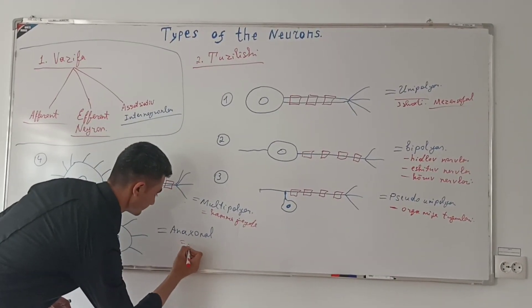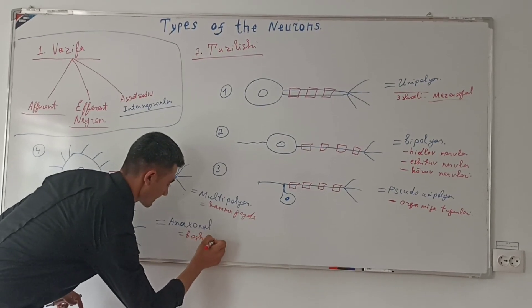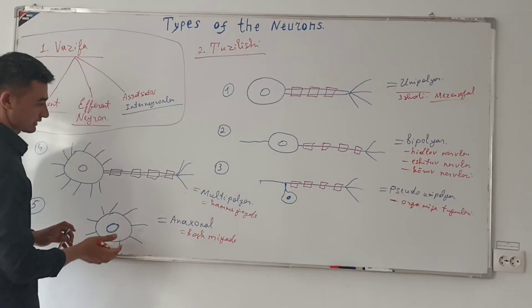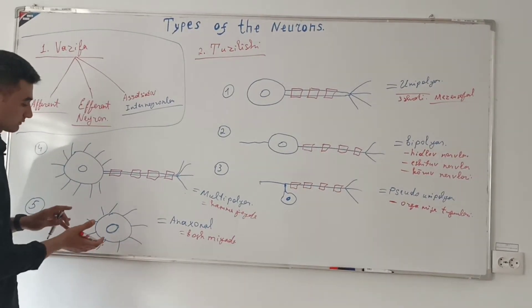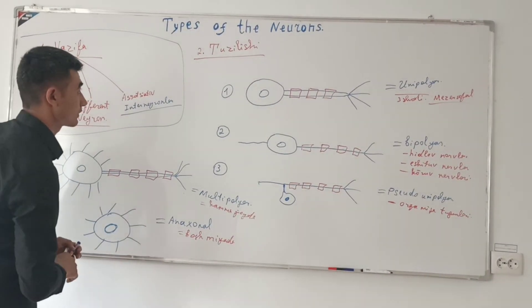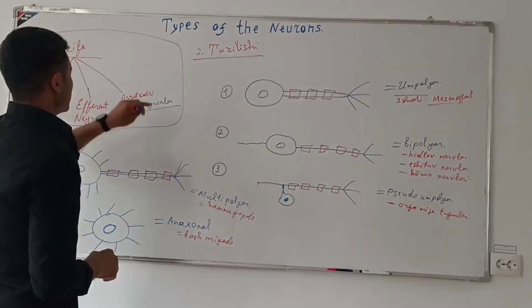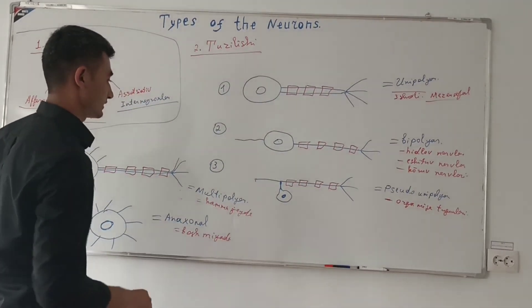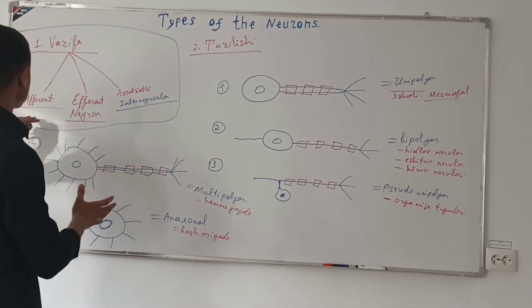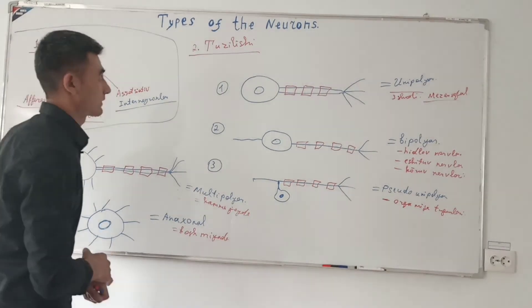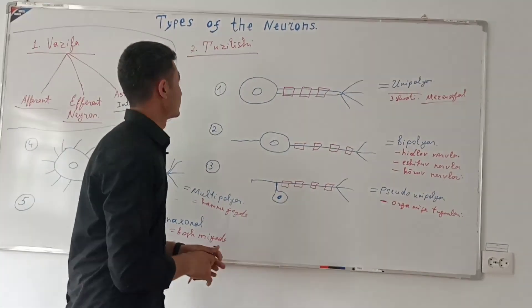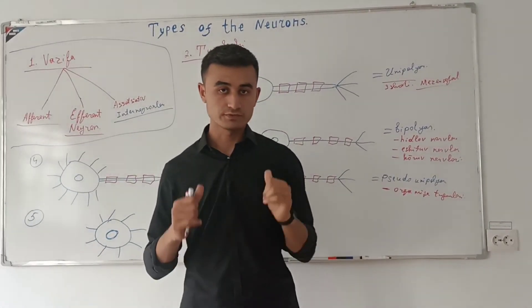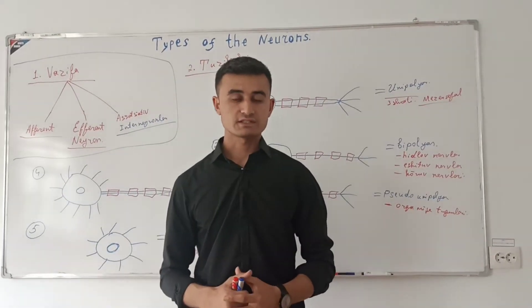Bu neyronlar sun'iy neyronlar kabi ishlatiladi. Biz neyronlardan robotik va sun'iy intellekt tizimlarida foydalanamiz. Rahmat.